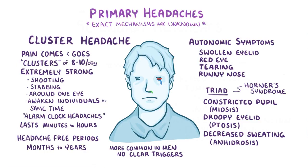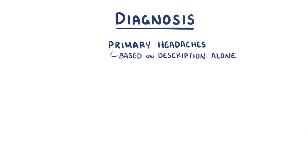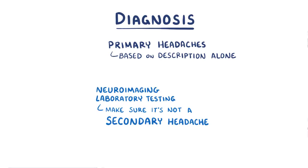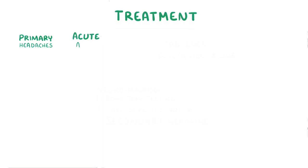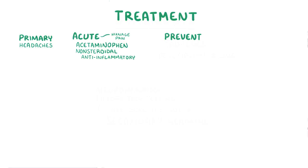Diagnosing a primary headache is usually based on the description alone. Sometimes neuroimaging and laboratory tests are used to make sure it's not a secondary headache. For primary headaches, there are two treatment approaches: acute treatment, like acetaminophen and non-steroidal anti-inflammatory drugs to help manage the pain, and preventative treatment to keep headaches from happening in individuals that have severe, debilitating headaches.